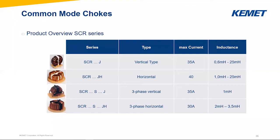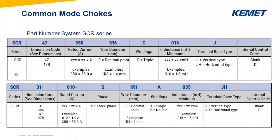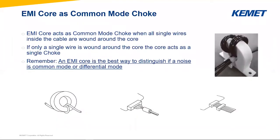For the SCR series — products on a round core — we have the same vertical (J) or horizontal (JH) types. Adding an S in the middle gives a three-phase vertical or three-phase horizontal type. Maximum currents go much higher, up to 40 amps. The part number also indicates single, double, or triple windings, which relates to wire thickness — thicker wire handles higher currents.